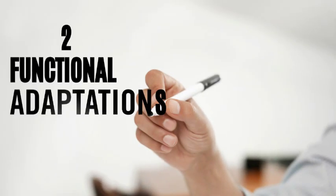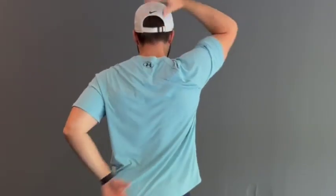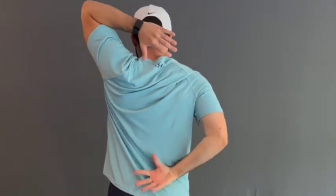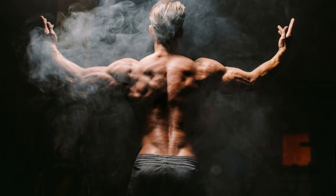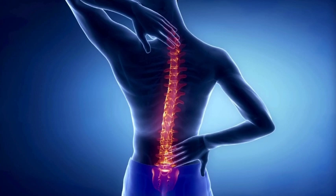Number two: functional adaptations. Many asymmetries develop due to functional adaptations. For example, the dominant side of someone's body — whether the leg, arm, or shoulder — is often going to be stronger and have more refined motor skills. This can lead to asymmetry, meaning a difference in muscle size, strength, and even coordination. However, this does not inherently mean there's going to be a problem, because the body often compensates for these differences in a balanced way.